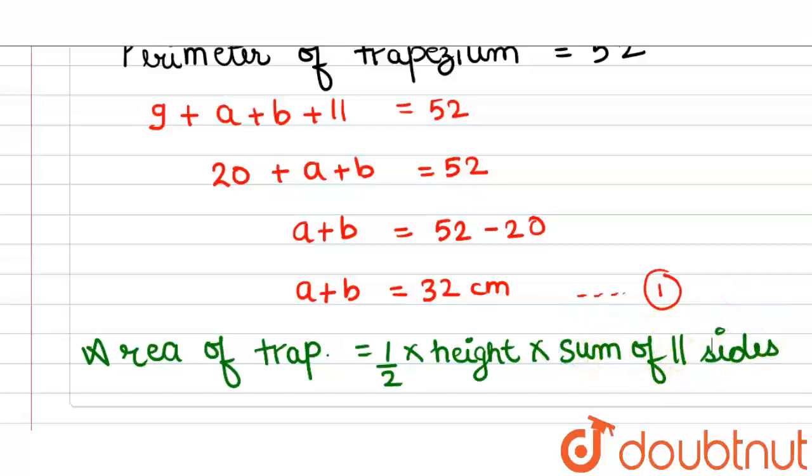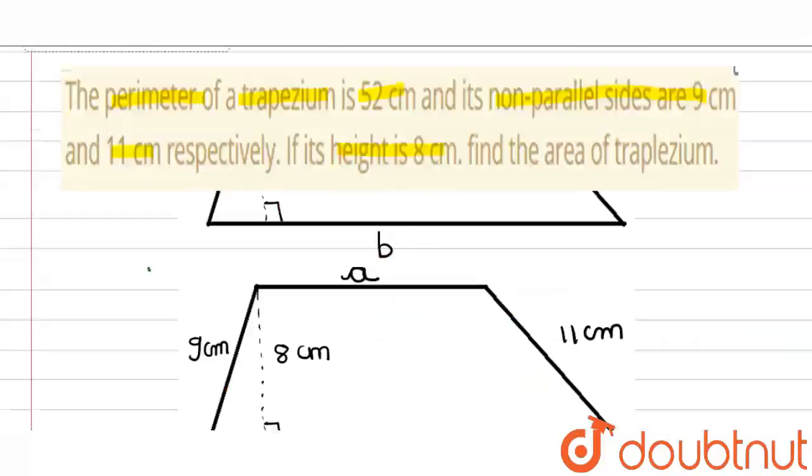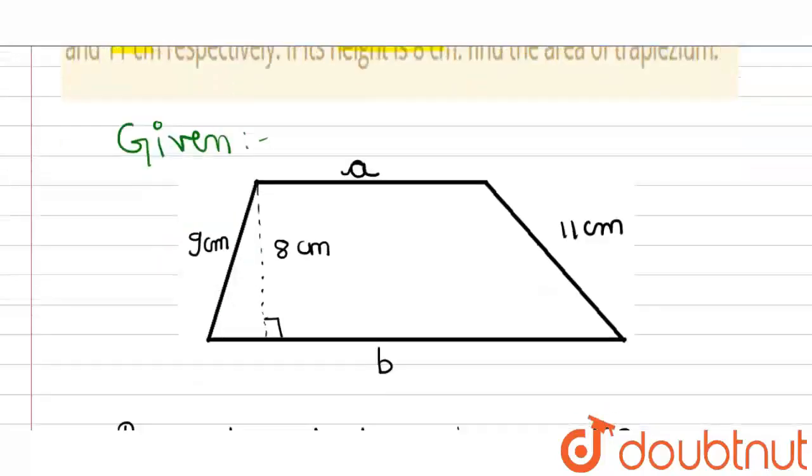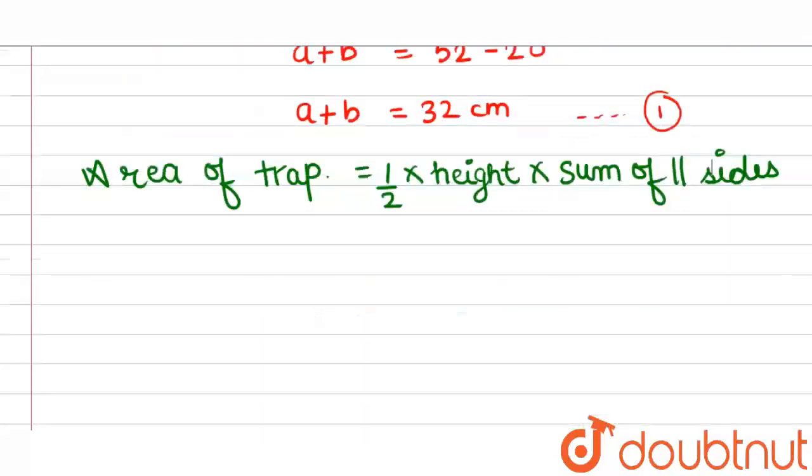So in our case, the height is 8 cm and the parallel sides are of the length A and B. So this could be written as half into height is 8 into sum of parallel sides is A plus B.